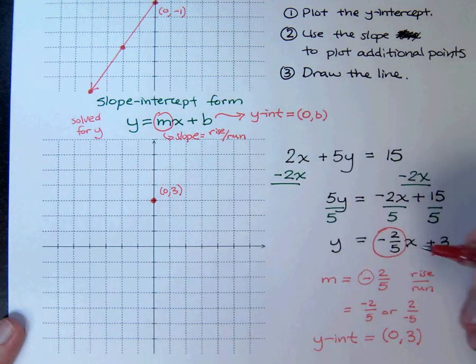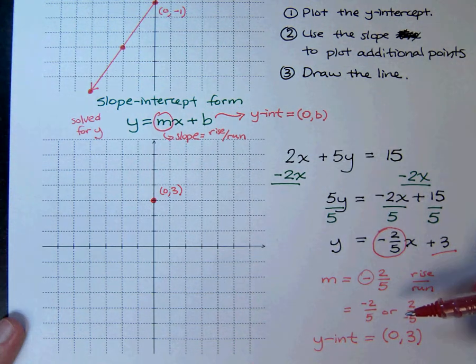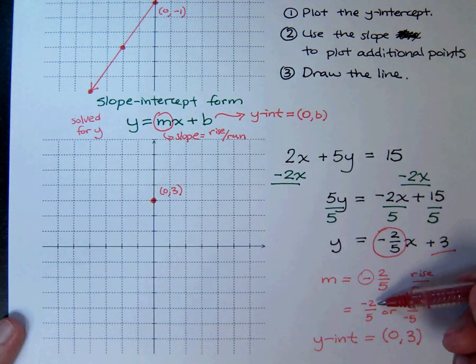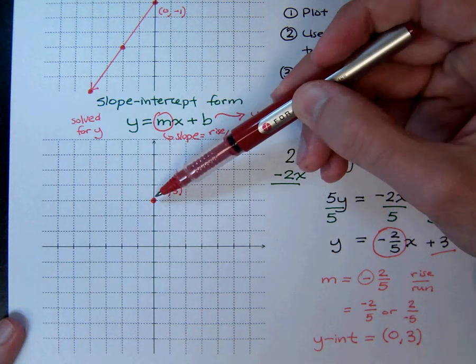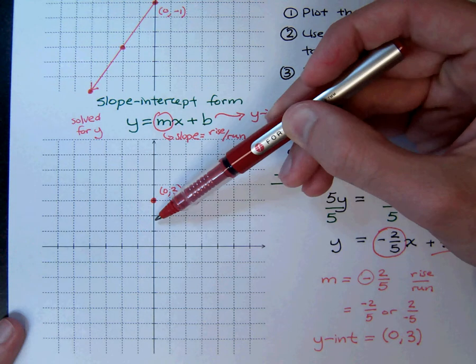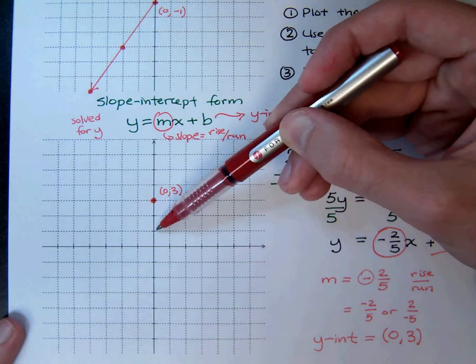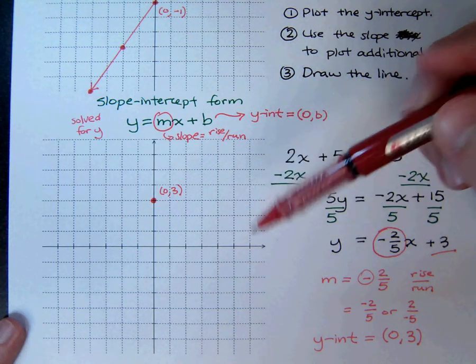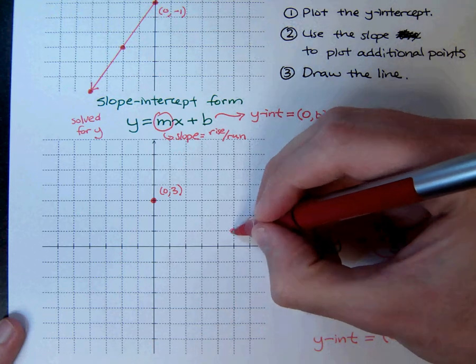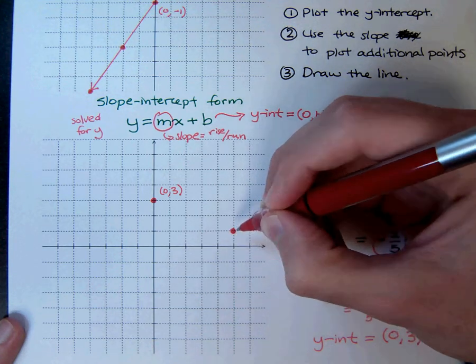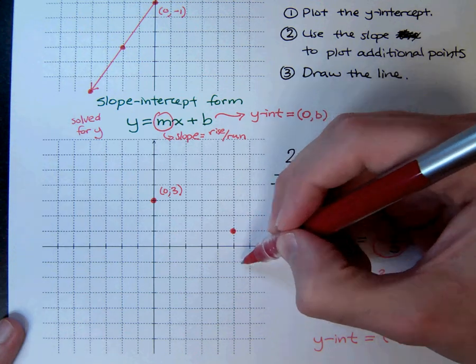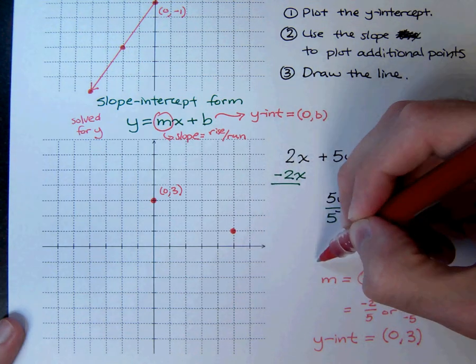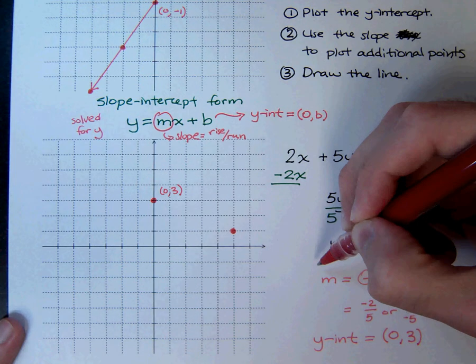And then I use the slope to find additional points. Let's use this guy right here, negative 2 over 5. That means from this point, I'm going to have a rise of negative 2 and a run of positive 5. That's going to put me at this point right here. Now, you see if I try to get another point by going the same direction, down 2 and over 5, well, I'm off the graph, I'm off the grid, so that's not going to help me out.